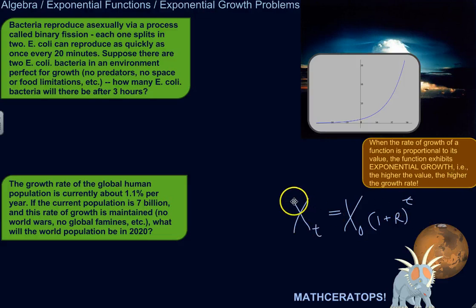To me, this is the clearest. So x of t, the value of the function at time t, is equal to x of 0, meaning the value of the function at the beginning, times 1 plus the growth rate raised to the power of t, the number of growth cycles that have occurred. So let's look at a couple of examples here to make that concrete.